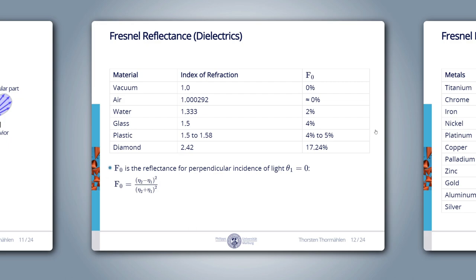On this slide we see the index of refraction for several dielectric materials. The table also contains the F0 values in percent. F0 is the reflectance for perpendicular incidence, when the incident angle theta1 equals 0. If we insert theta1 = 0 into the Fresnel equations, all cosine terms evaluate to 1 and the equations simplify. Putting in 1.0 for eta1 (air) and 1.5 for eta2 (glass), we get F0 = 4% — meaning only 4% of light is reflected and 96% is transmitted at normal incidence.